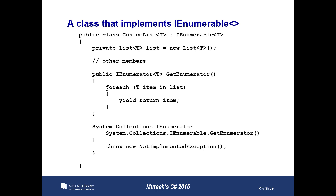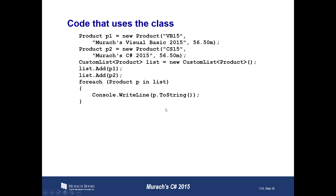When you implement the GetEnumerator method, you can use the yield keyword — as you can see right here — with the return keyword to return the current element to the object that implements the IEnumerable interface and yield control. Here's a code example that uses this. When you define an interface, you can use generics just like you do when defining a class. When implementing a generic interface you've defined, you can specify the type argument just like you would with generic interfaces from the .NET framework.